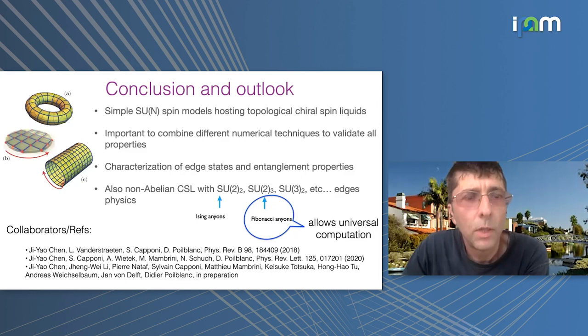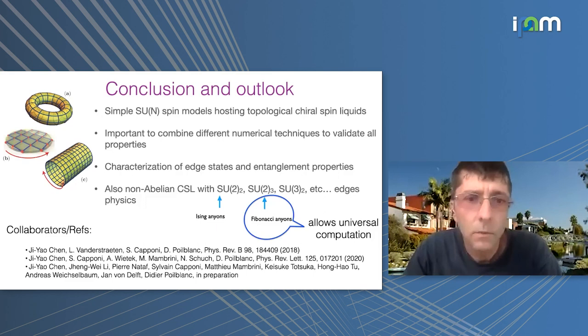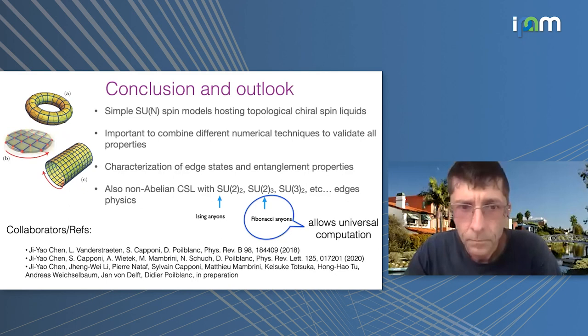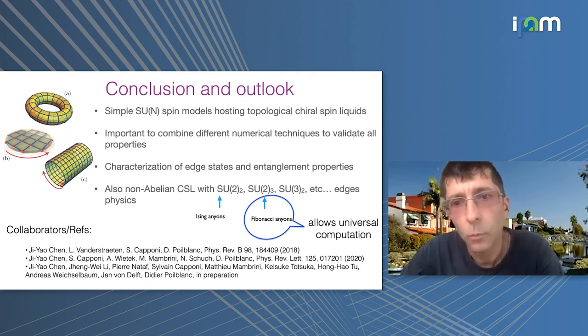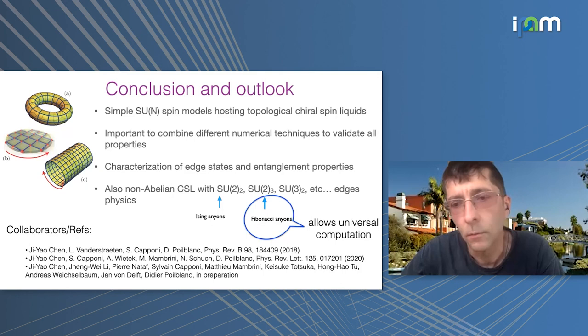As a conclusion: we can construct simple SU(N) spin models on the square lattice that stabilize topological chiral spin liquids. It's important to combine different numerical techniques — as emphasized by Steve White on the first day — because they all have their strengths and weaknesses. We characterize mostly the edge states using entanglement properties, which are well suited for tensor network techniques. The roadmap going forward: we already did SU(2) level 2 with its Ising anyons, but we want to go further because SU(2) level 3 has fibonacci anyons that could allow universal quantum computation, and one can go to higher SU(N) and higher levels. Thank you for your attention.